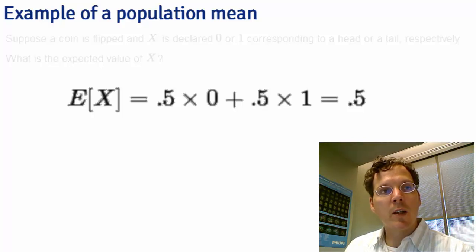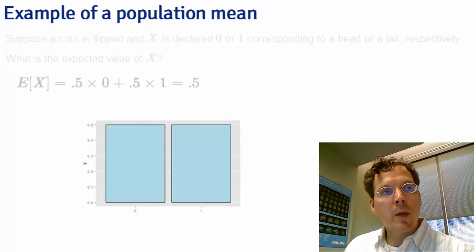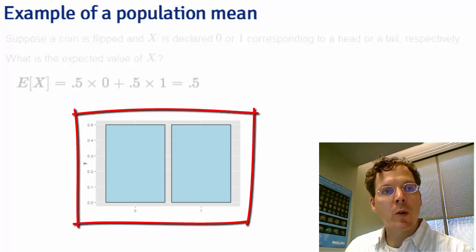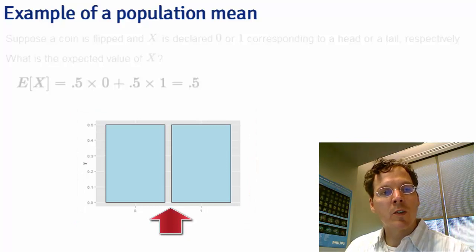Notice the expected value is a value that the coin can't even take. However, if we think about this geometrically, the answer is quite obvious. If we have two bars of equal height, one at 0 and one at 1, and we wanted to balance them out, it's clear where exactly we would put our finger. It would be right here at 0.5.